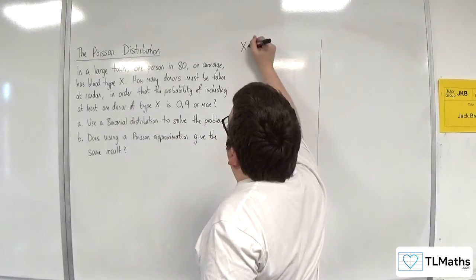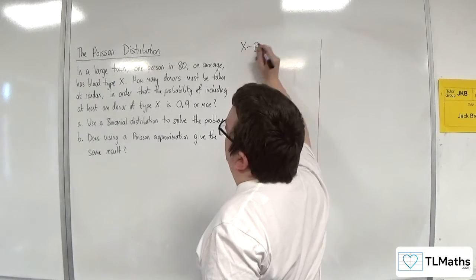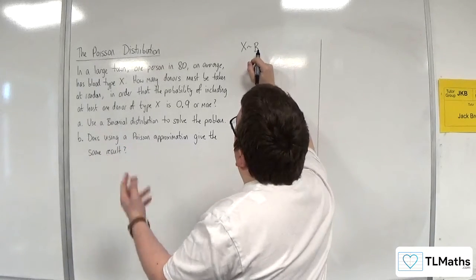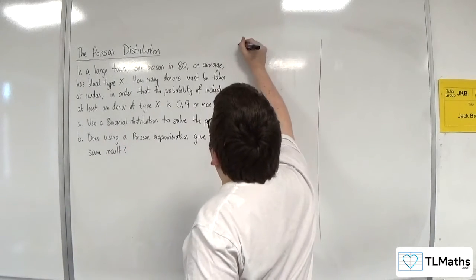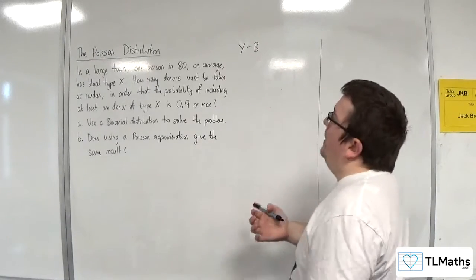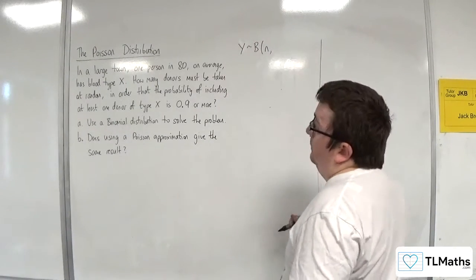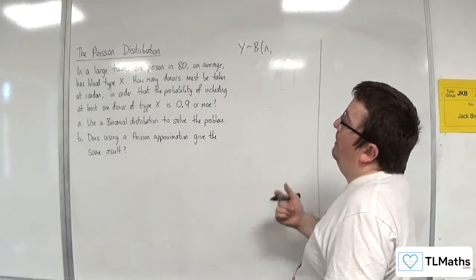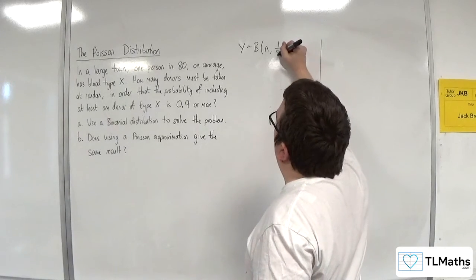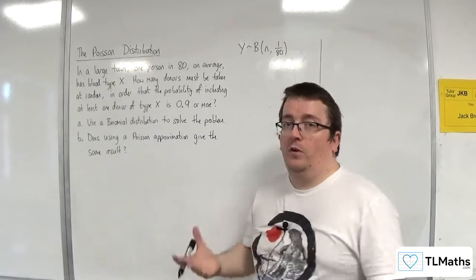So X is a binomial distribution. Well, maybe I shouldn't use X because we've got blood type X. Let's choose Y. Y is a binomial distribution where I don't know N, but I know that the probability is 1 in 80. So N is what I want to find.